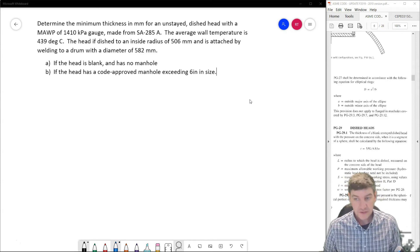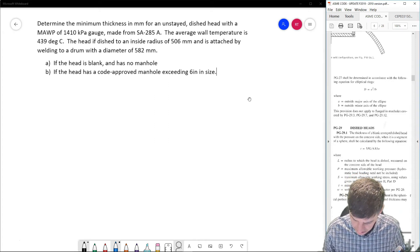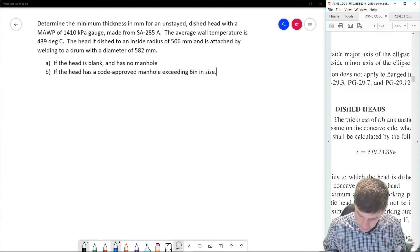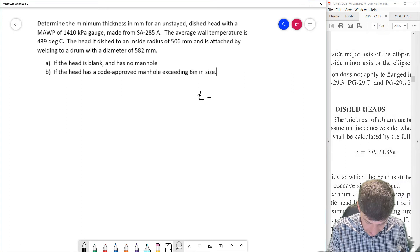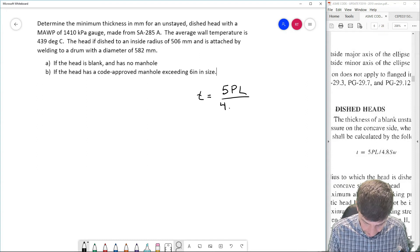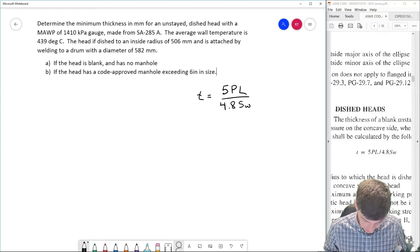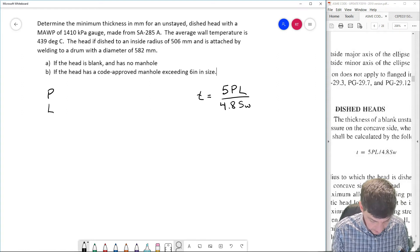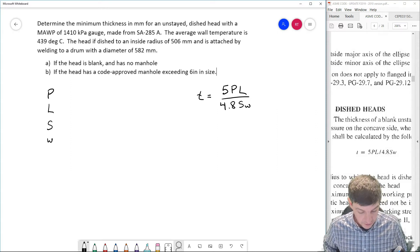The second case is if the head has an approved manhole exceeding six inches inside, so we're going to have to use the manhole clauses. Okay, I have my equation over at the side here. My dished head thickness is going to be 5PL divided by 4.8SW. So same process that I've gone through, I'm going to write that out: thickness equals 5PL over 4.8SW. And then I'm going to make a list of all the stuff that I need to know: P, L, S, and W.